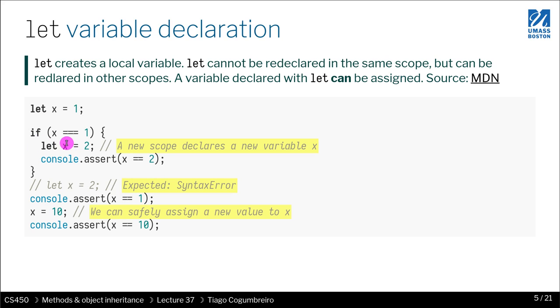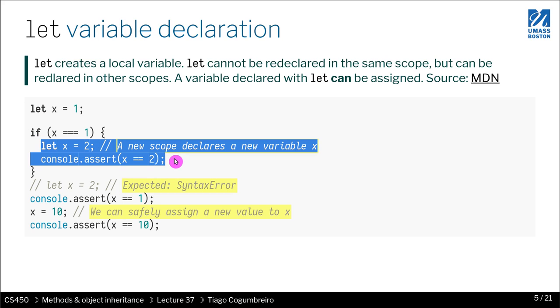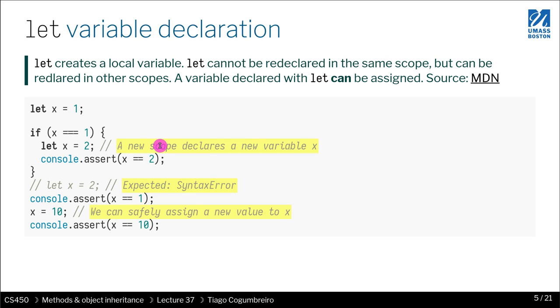So if you declare let, it is only visible, this x is only visible inside of this. So the scoping is the syntactic scoping. And it is mutable.